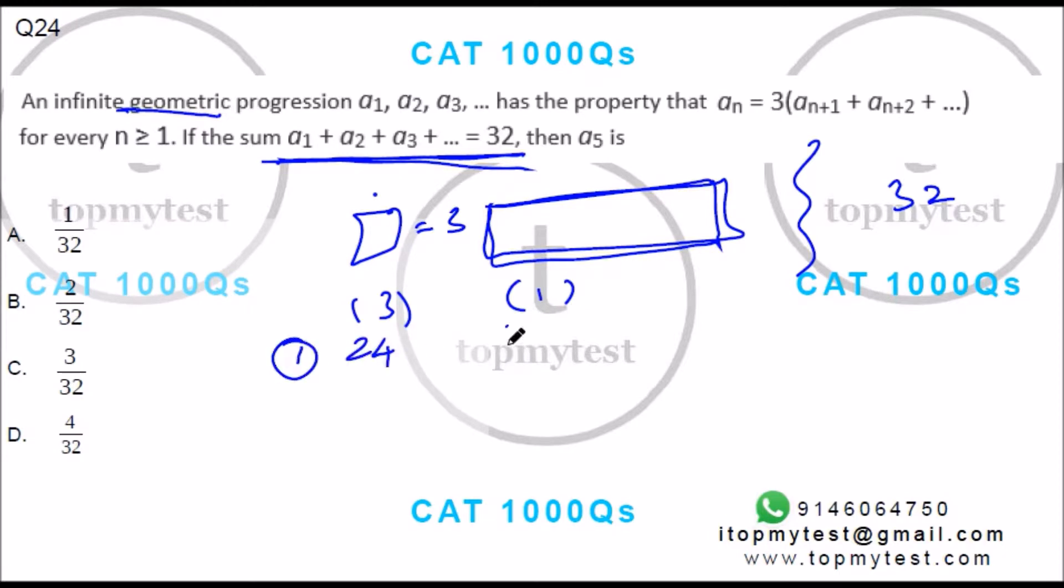Now if I apply the same process, the second term will be three times the sum of the rest of the terms from the third onwards. The sum of all these terms is 8, so split 8 in the ratio 3:1. Three parts goes here, one part goes here, so the second term